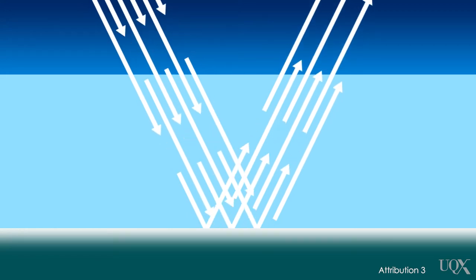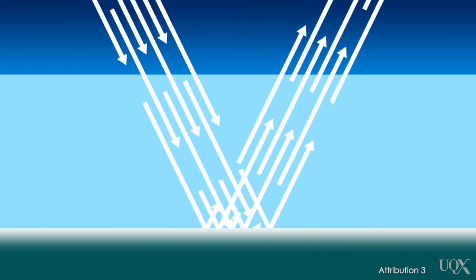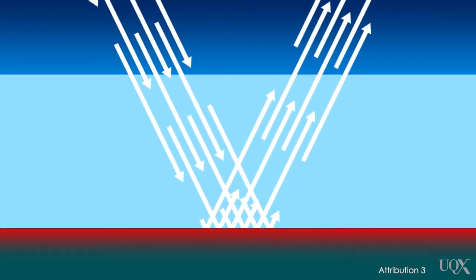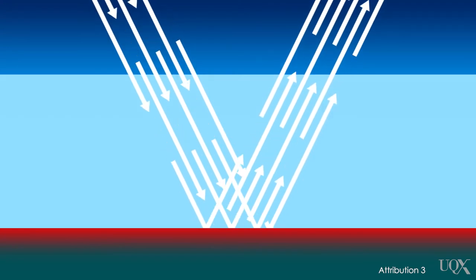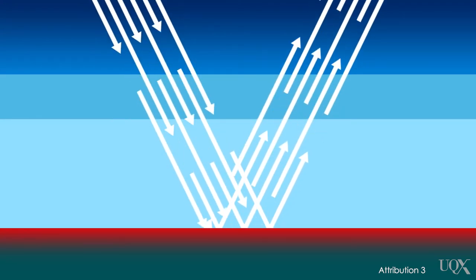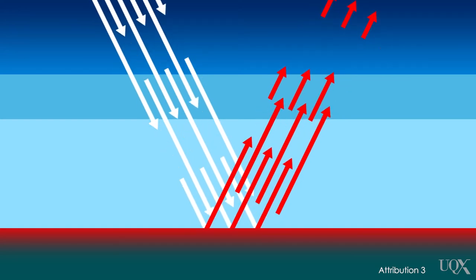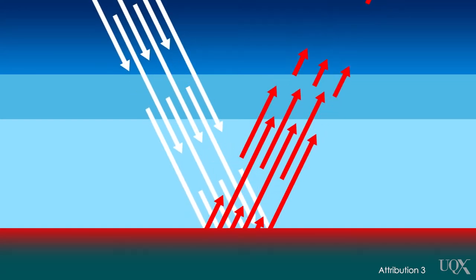This heat has to go somewhere, or we'd just get hotter and hotter. Earth glows with infrared, a form of light that's invisible to the human eye. Greenhouse gases let through visible light from the sun, but they absorb the infrared from the Earth. They slow down its escape and they keep Earth warmer.